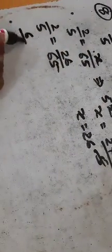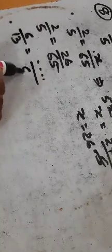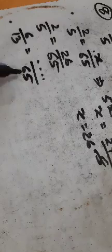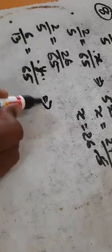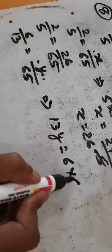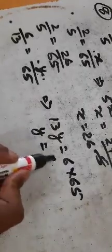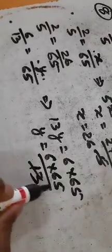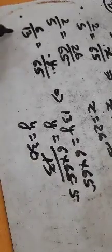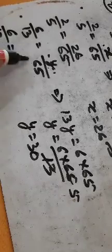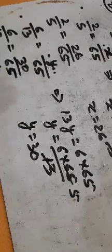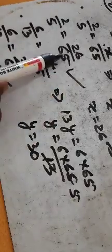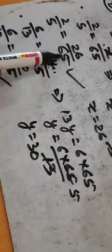For six by thirteen with denominator 65: setting up six by thirteen equals y by 65. So y equals six into 65 divided by 13, giving y equals 30. Therefore six by thirteen equals 30 by 65.